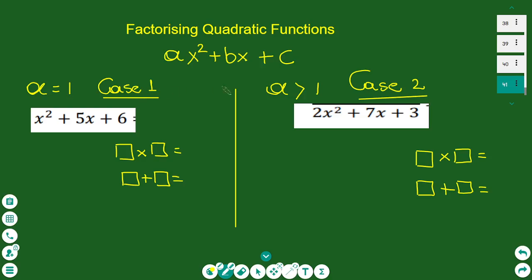Here I have two cases of quadratics: when a equals 1, this is the first case, and when a is more than 1, this is the second case. We use similar ways of factorizing the two quadratic functions. In the first case when a equals 1, for example x² + 5x + 6.